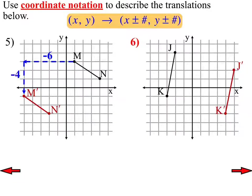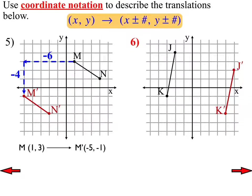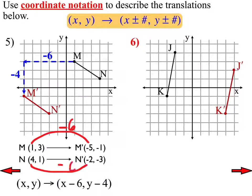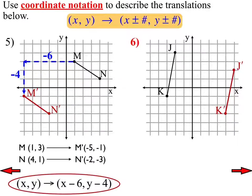We went 6 to the left and 4 down. We can double-check that with point N — going 6 to the left and 4 down checks out. So the coordinate rule is (x, y) → (x−6, y−4). To verify using the ordered pairs: to get from 1 to -5 in the x-values, subtract 6. Same thing from 4 to -2, subtract 6. For the y-values, to get from 3 to -1, subtract 4, and from 1 to -3, also subtract 4. So we subtract 6 from x and subtract 4 from y.